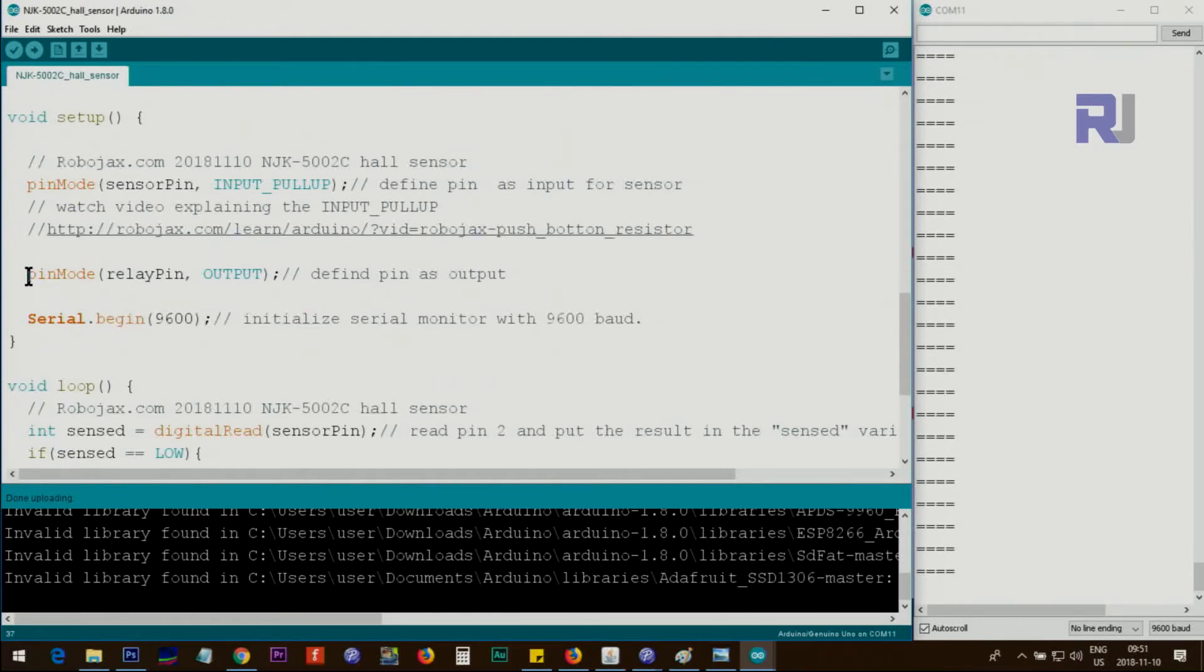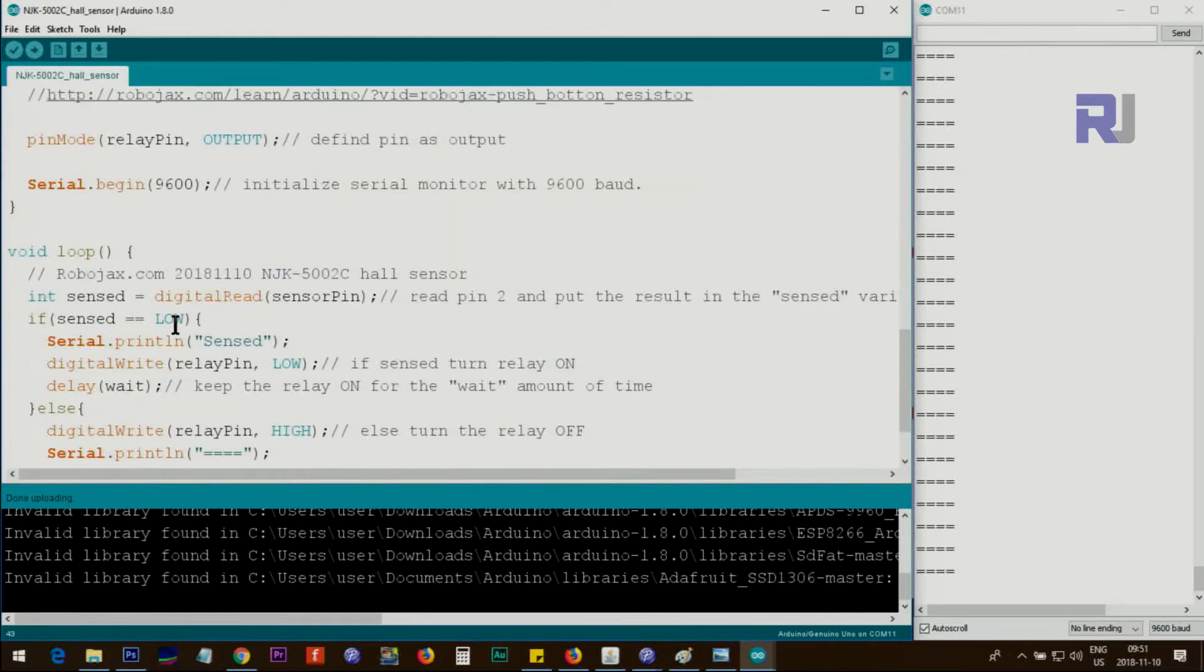Then we go pinMode, this time we define the relay pin as an output. This was an input, this is an output. And we initialize the serial monitor with 9600 baud so we can print this text here, and this must match the 9600 baud on this side in order to be able to read it.